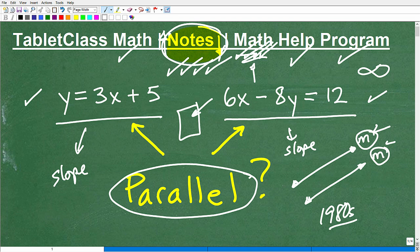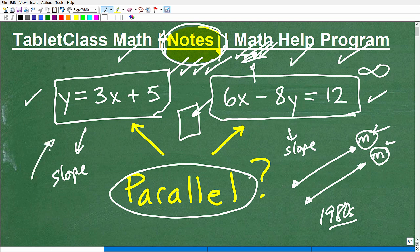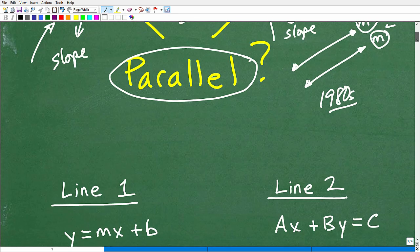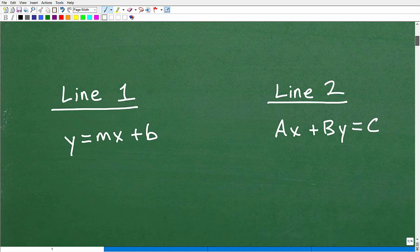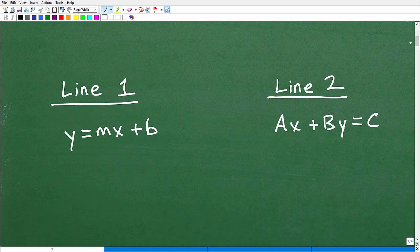All right, so I pretty much laid out how to do this problem, okay? So we have this linear equation and this one here. So this comes down to your ability to identify the slope, okay? We've got to find the slope here, and then we've got to find the slope there. If the slopes are the same, then these lines are parallel, okay? So, again, I'm going to go ahead and get into this problem now. So if you don't want to see the full solution, well, then pause the video.